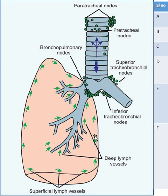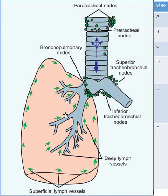Describe what you see in this figure. In this figure, I see the superficial lymph vessel, which drains the peripheral lung tissue lying beneath the visceral pleura, and this lymph is drained into the bronchopulmonary node. The deep lymphatic vessels drain the bronchial tree — not only the bronchial tree, but also the pulmonary vessels and connective tissue — and drain into the bronchopulmonary nodes.